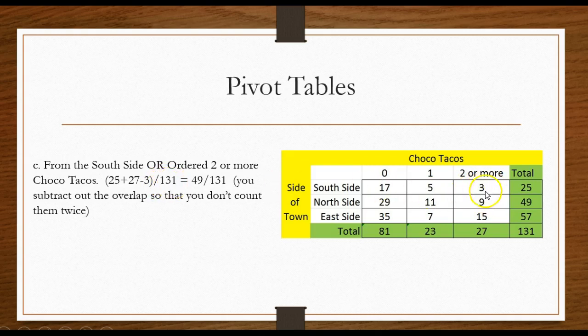Because I counted it twice when I was totaling the two or mores and when I was totaling the south side. So it's the south side plus the two or more minus the overlap so I don't count them twice. So my probability would be 49 out of 131 or the decimal form.